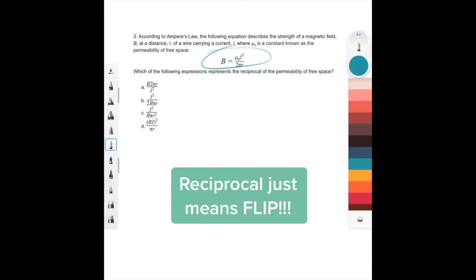It's not this messy equation here, but it's just asking which of the following represents the reciprocal of the permeability of free space, and all that means is solve for this, because it tells us that this is the constant known as the permeability of free space. So let's write this out.